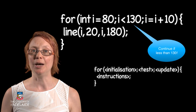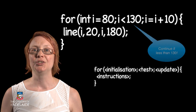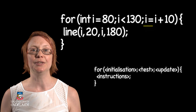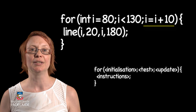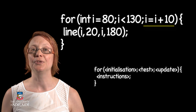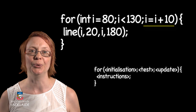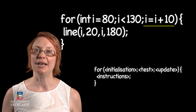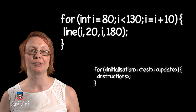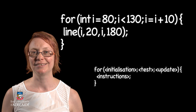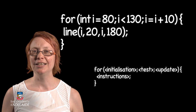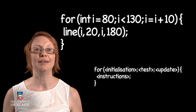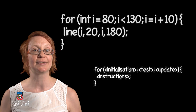And the last part, the update, changes the value of the variable declared in the initialization to get it ready for the next go through the loop. In this case, adding 10 pixels to the x coordinate. Let's watch this execute line by line and see what happens.